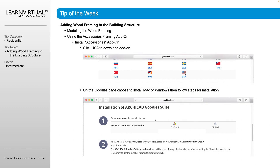Then you just go through the installer wizard and pick whether you're doing a Windows or a Mac install. With the new Macs that are coming out, you actually have two different options — if you have the Mac Silicon or the Intel processor, there are two different downloads available for you.